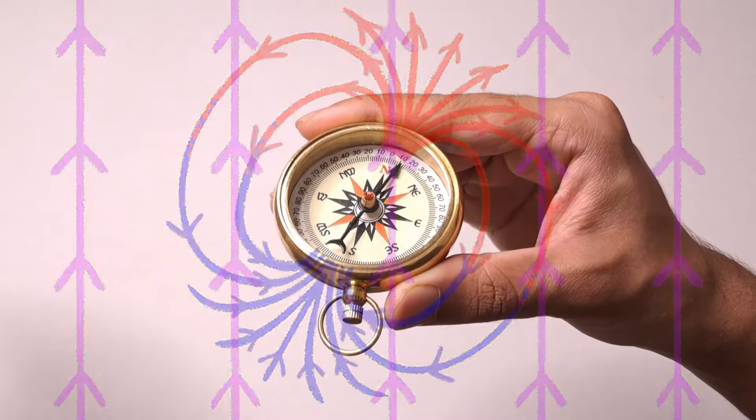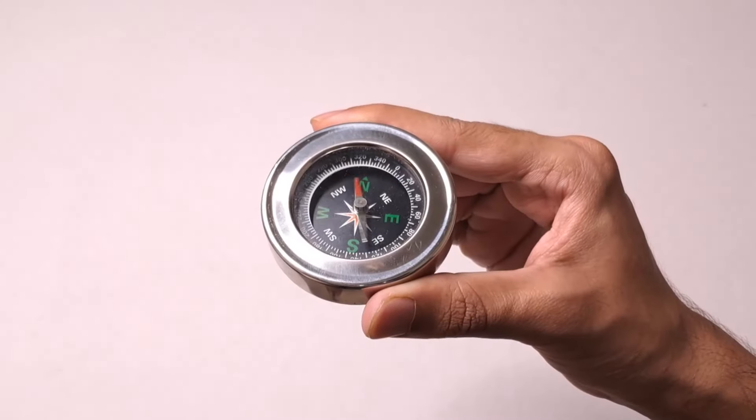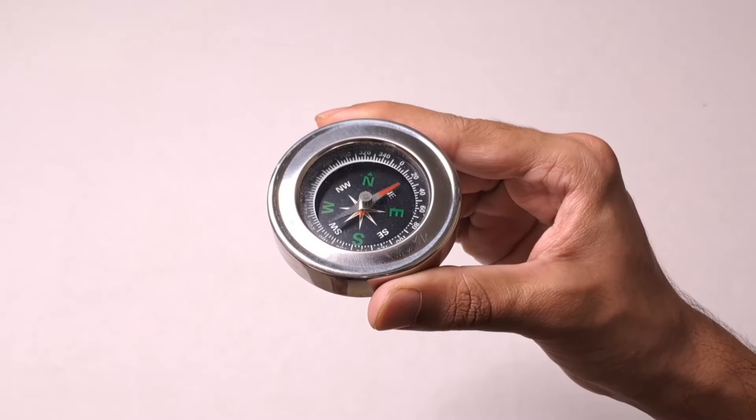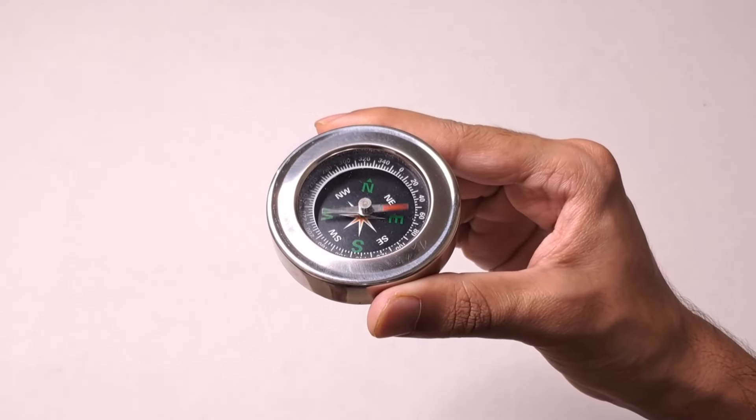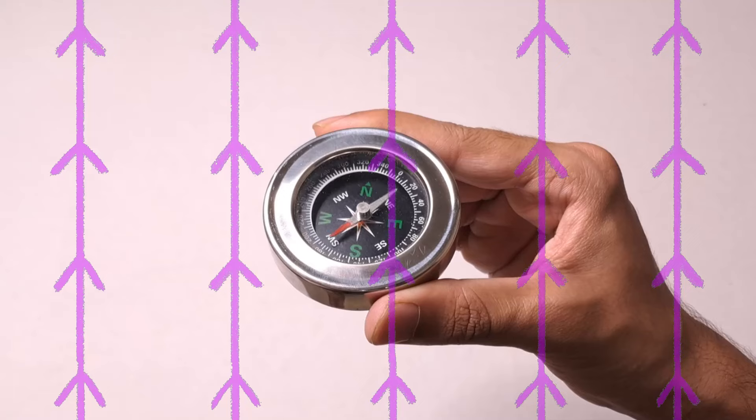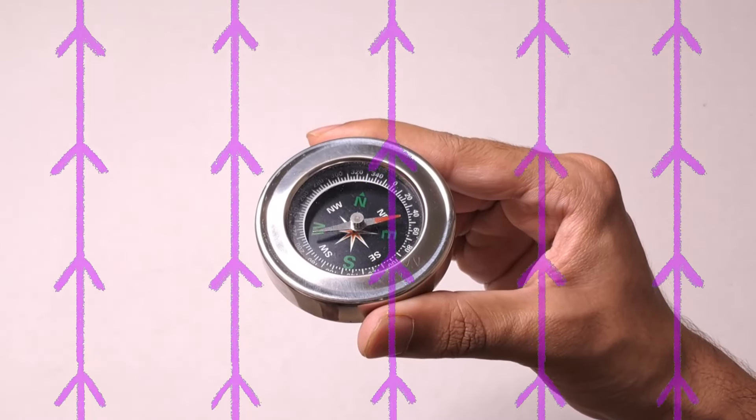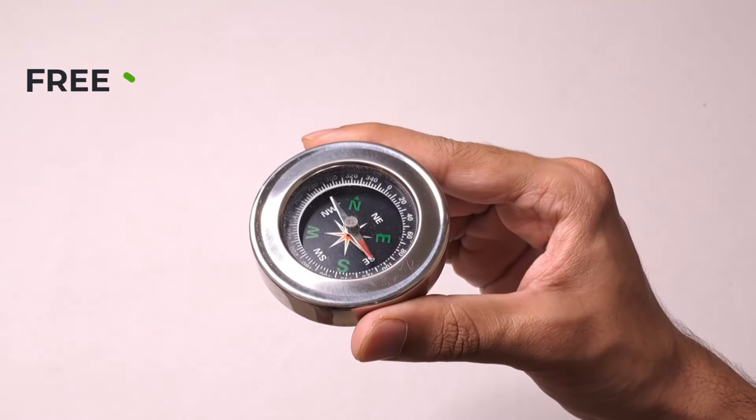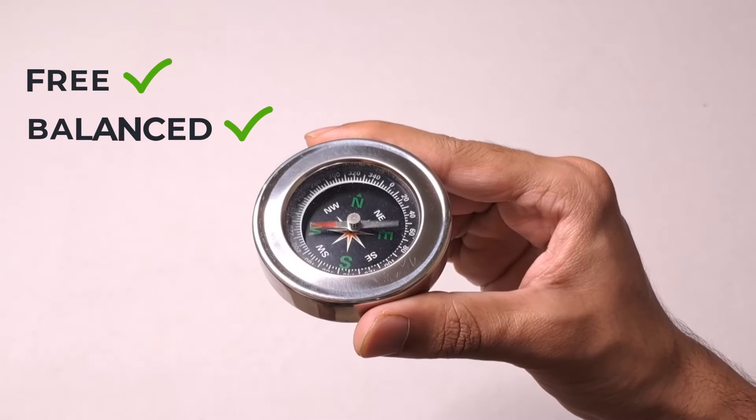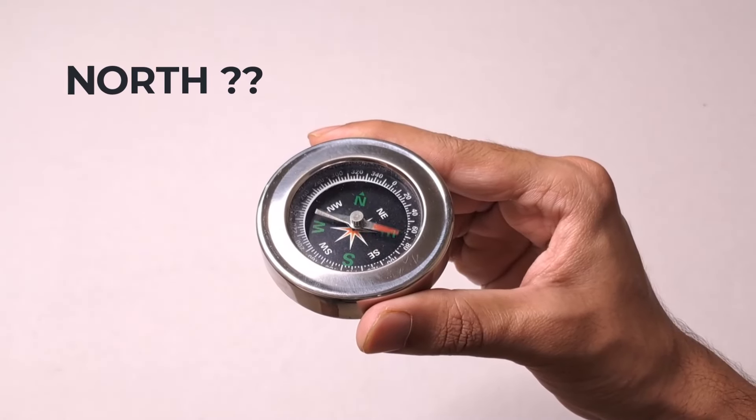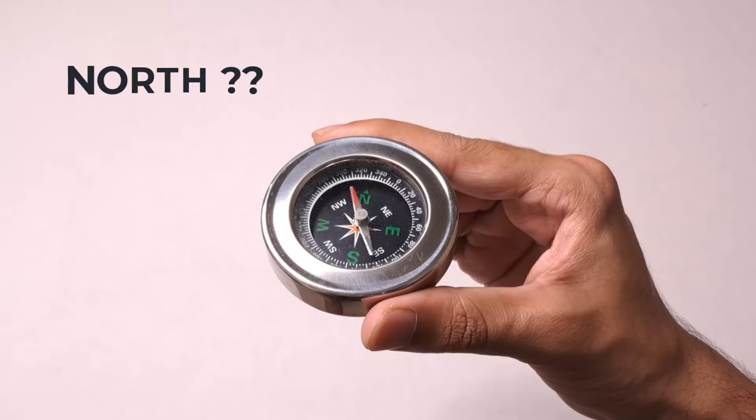Instead, if the needle is non-magnetic, meaning if it is just a random piece of metal, there is no way it can sense the magnetic field of the earth. It just keeps moving randomly. Even though it is free, it is balanced, it still doesn't know where north is. So what's the use of this balance?